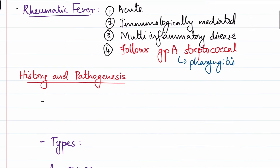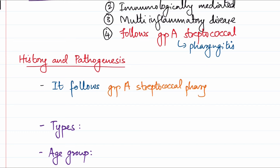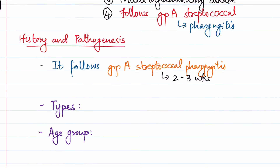As we have said, it follows Group A streptococcal pharyngitis. It usually takes about two to three weeks — there is a two to three week delay. Why this delay? This is the time required for development of the immunological reaction.